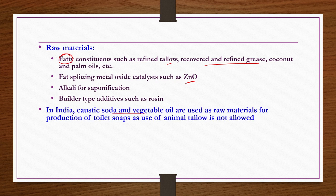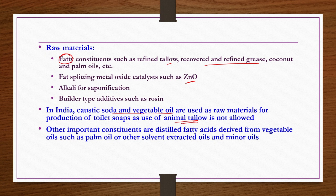In India, caustic soda and vegetable oil are used as raw materials for production of toilet soaps, as animal tallow is not allowed in India for soap manufacturing. Other important constituents are distilled fatty acids derived from vegetable oils such as palm oil or other solvent-extracted oils and minor oils discussed in the previous chapter on oils and fats industry. These can be used as per requirement. Primarily the first three raw materials are essential; the fourth is as per consumer requirement.